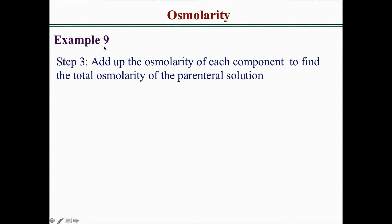Step 3 is to add up the osmolality of each component to find the total osmolality of the entire solution. Our total osmolality will be 300 from the calcium chloride plus 4 from the potassium acetate, giving a total osmolality of 304 milliosmoles per liter.